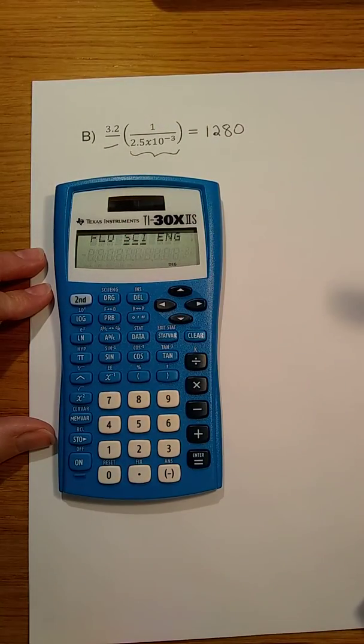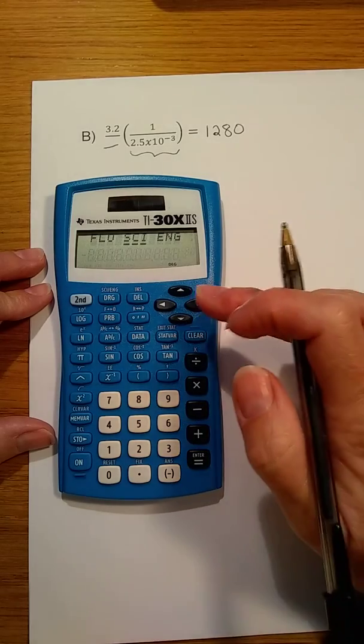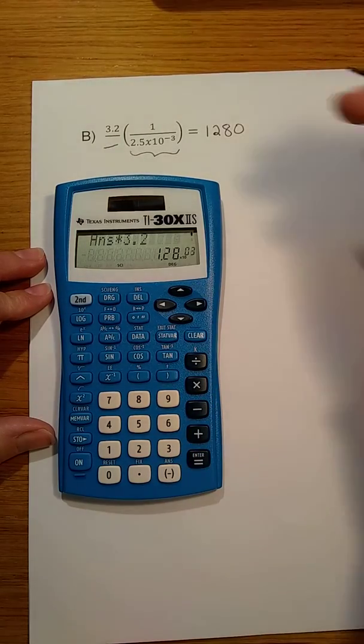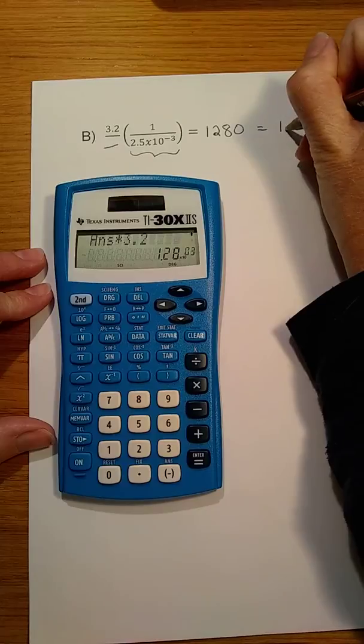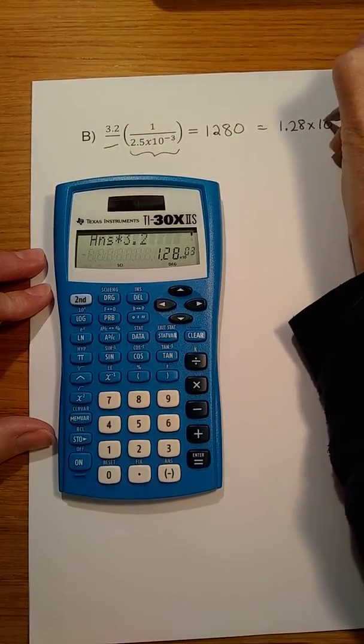Using the cursor, move over to the SCI mode, hit enter, and we see that this has the value of 1.28 times 10 to the third.